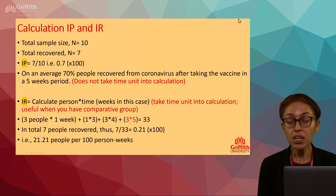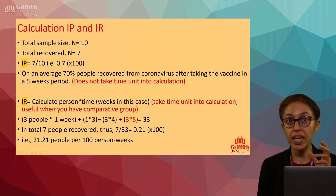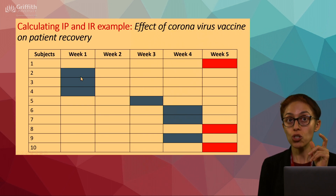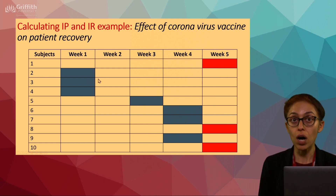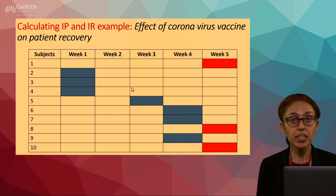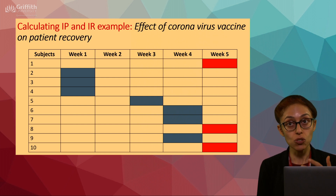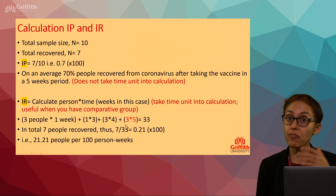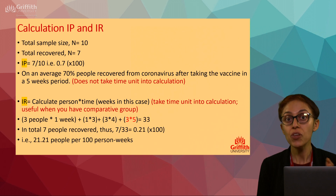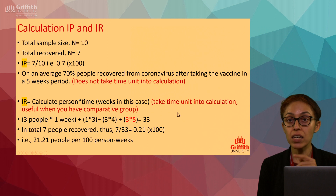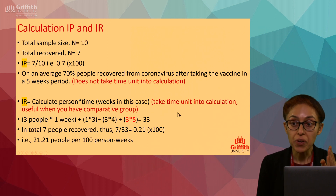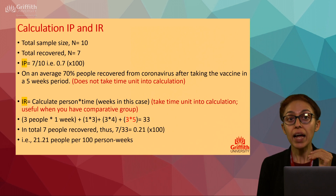Now for the incidence rate. The formula requires calculating person-time. The unit of time in this example is weeks — week one through week five. Your unit of time may differ between examples; here it is weeks, not days, not hours.